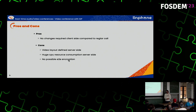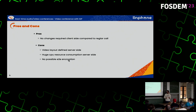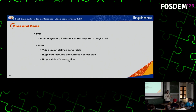The advantage of this approach was that it was very simple from the client side — calling a conferencing server was almost the same as calling a regular user agent. The drawbacks were that the video layout was defined server-side, so you could have only one or two different layouts. It requires a lot of CPU resources, as every video stream has to be decoded and then re-encoded. And end-to-end encryption was not possible due to the fact that the video was decoded on the server.